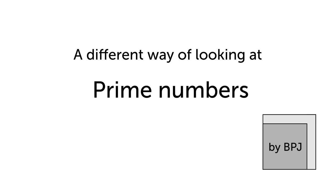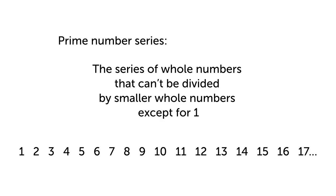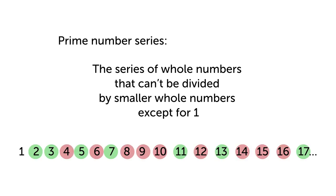One of the coolest things in maths is prime numbers, and they make up a big chunk of number theory. Prime numbers are the series of whole numbers that can't be divided by smaller numbers except for one, which is called the unit. That means there are two types of whole numbers greater than the unit: the prime numbers, and the numbers that aren't primes. Those are called composite numbers because they can be composed by multiplying prime numbers together.